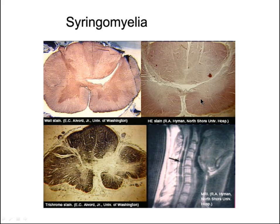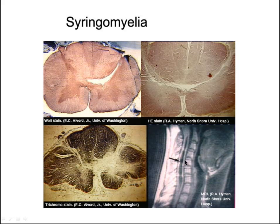What can go wrong with the spinothalamic tract? There's a condition called syringomyelia, where you get a cavitation of the spinal cord. It can be brought on by injury, some sort of disease, or it can be idiopathic. You can see here we're starting to get this syrinx, or tube. Syrinx is Latin for tube or hollow reed, and the word syringe comes from syrinx.